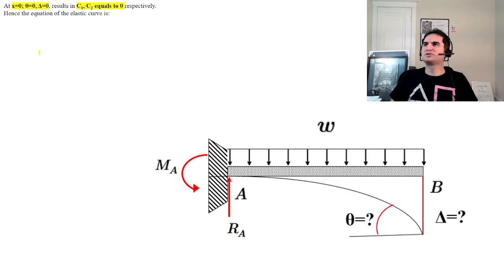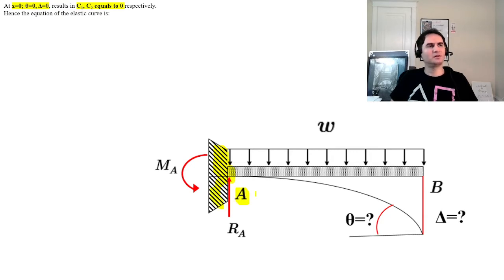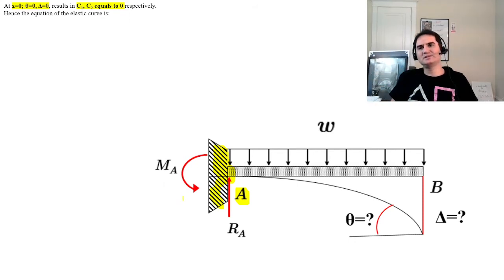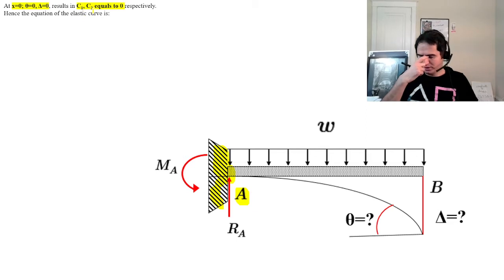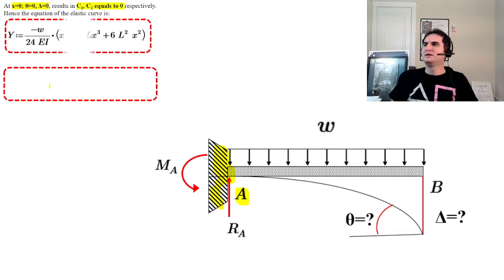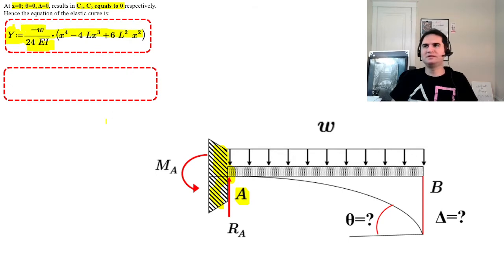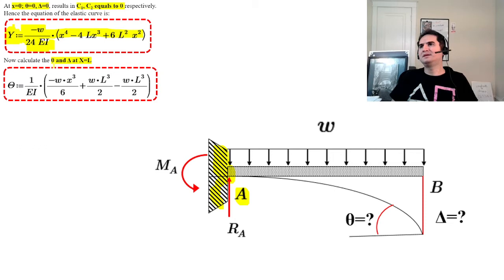Applying the boundary conditions: at x equals 0, which is the fixed end, both theta and delta are zero - there is no movement and no rotation at a fixed end. Substituting these into the slope and deflection equations shows that both constants C1 and C2 equal zero, leaving clean equations for theta and delta.